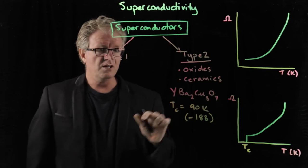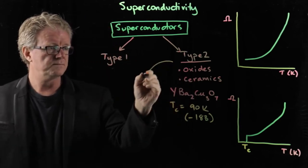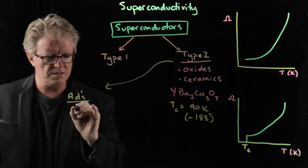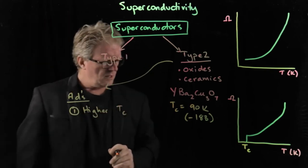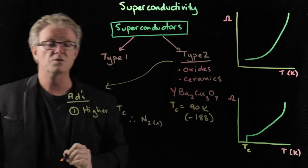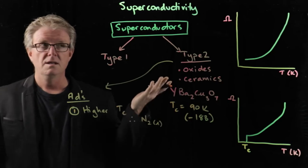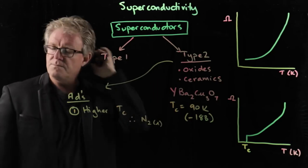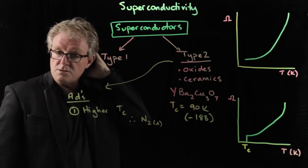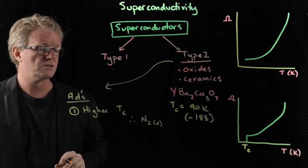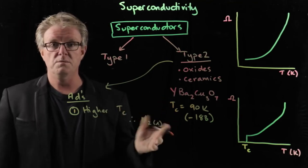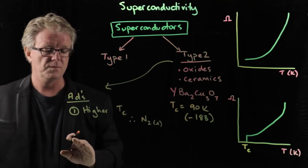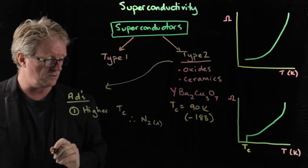What are the advantages of Type 2? We can use liquid nitrogen, which is readily available. I mean, the air is 78% nitrogen-ish. So it's easily available. It's quite cheap. And so therefore, it's nice and easy. So it's an advantage.